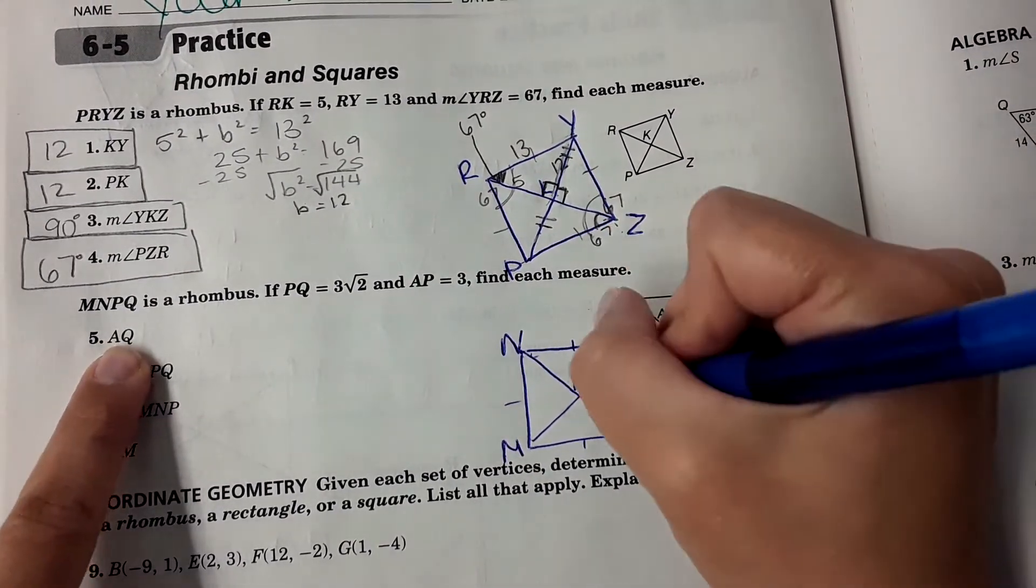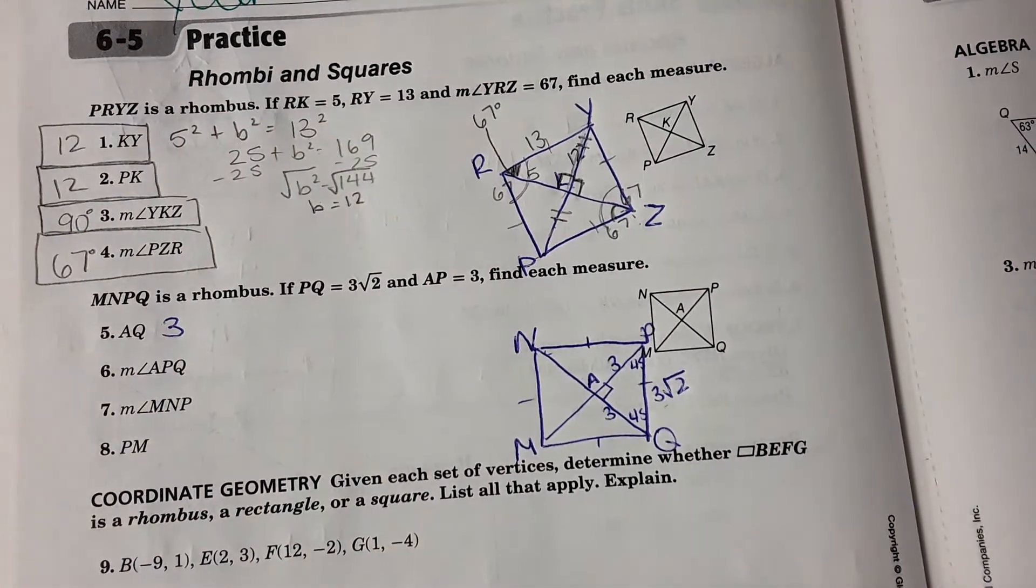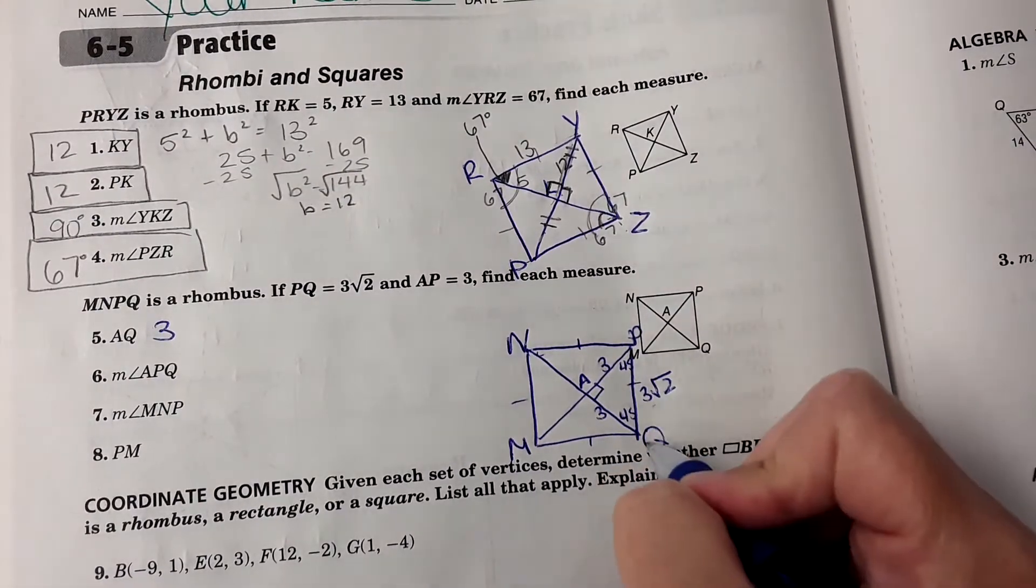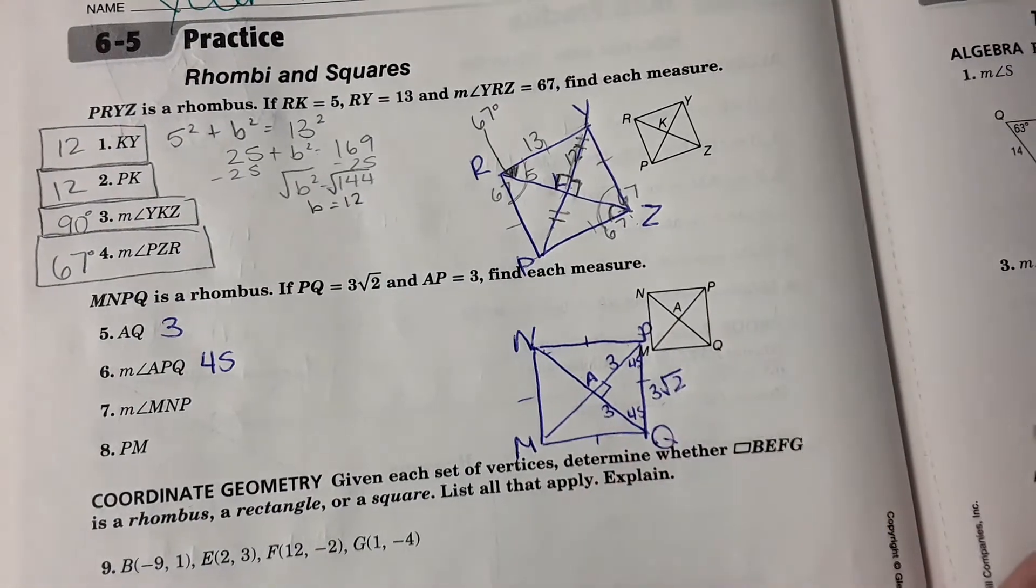So then it's going to follow all the rules of a square. So for AQ, this would be 3 units. And then APQ is 45 degrees, because if this is a 90 degree angle, half of that would be 45 degrees.